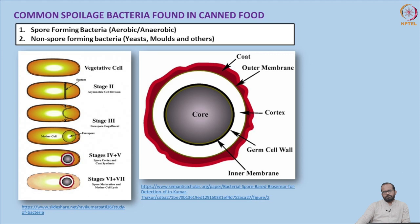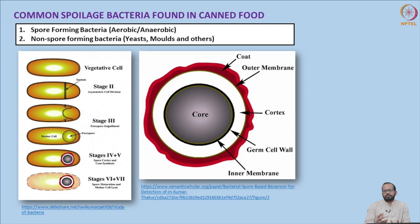Common spoilage bacteria in canning can be classified based on spore-forming capacity: spore-forming bacteria (aerobic and anaerobic) and non-spore-forming bacteria such as yeast and molds. Many thermophilic and mesophilic microorganisms can form endospores which tolerate higher temperatures than their normal ideal range. When confronted with extreme environmental conditions like high heat, pressure, or pH differences, these bacteria transform into spore form.